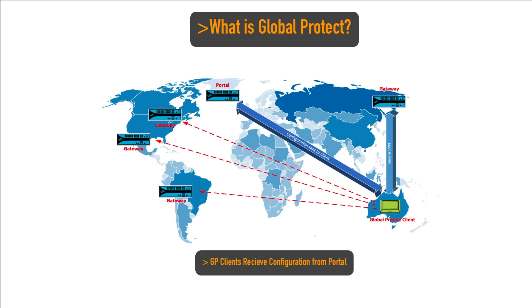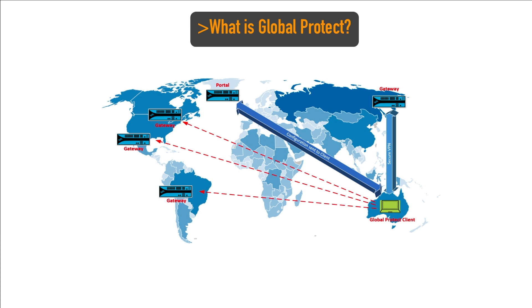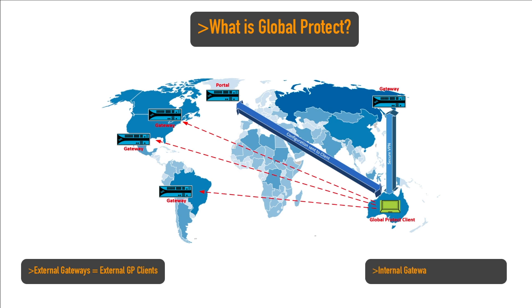Clients receive configuration including available GlobalProtect gateways and client certificates that may be required to connect to those gateways. There are two flavors of gateways: external gateways and internal gateways. The external gateway provides VPN access for GlobalProtect agents and apps from outside of the network, whereas internal gateways are configured to be accessed on the inside or trusted side of the network.